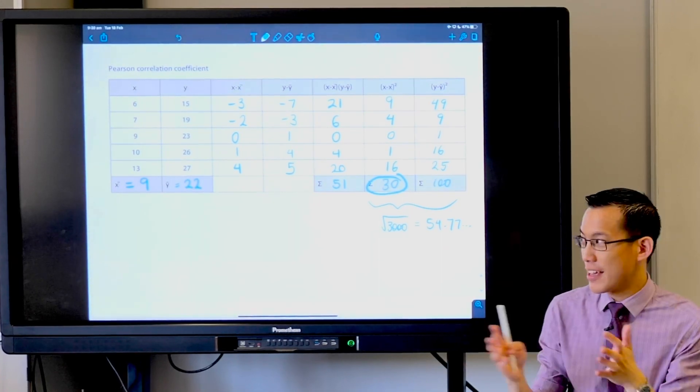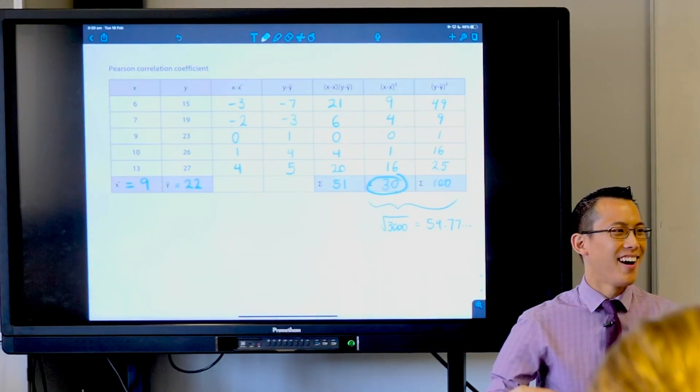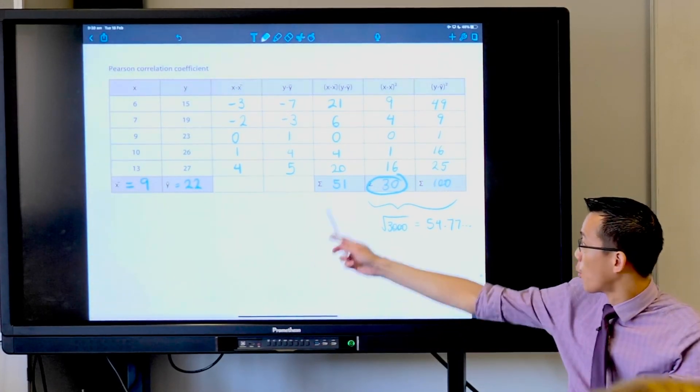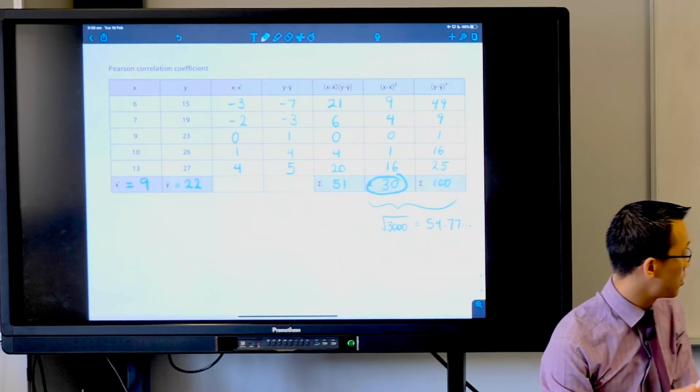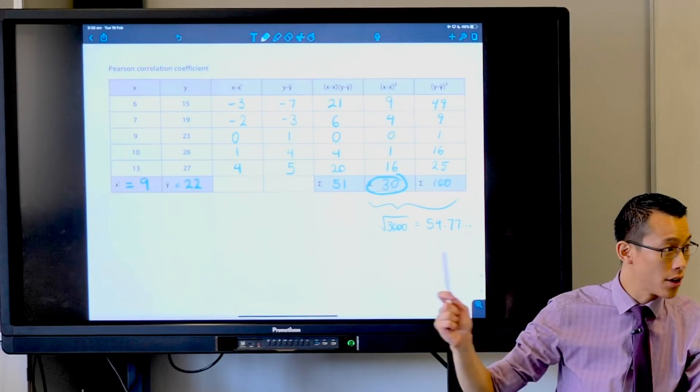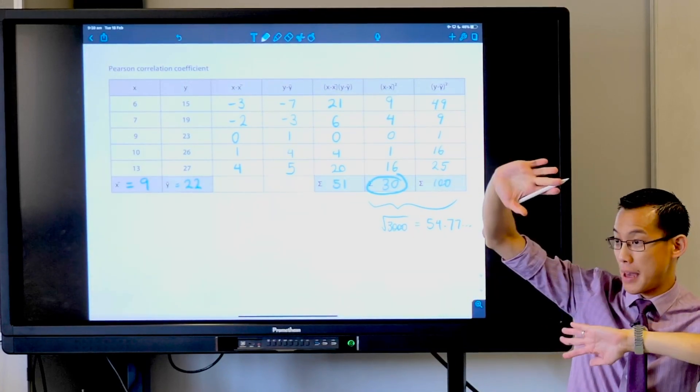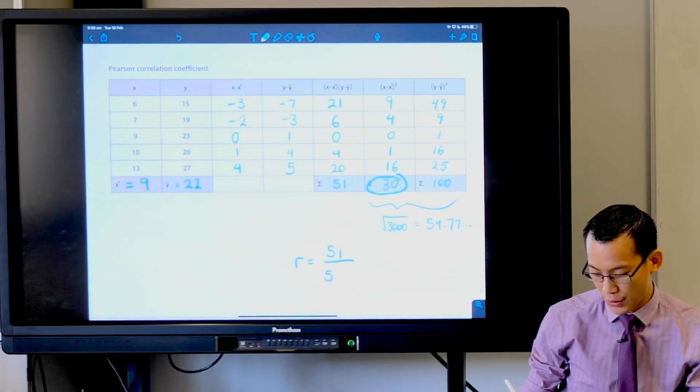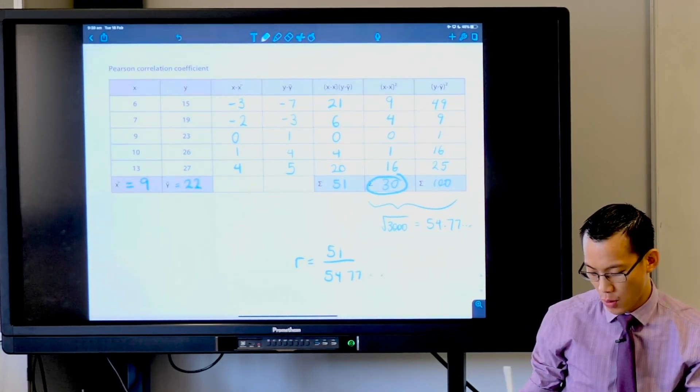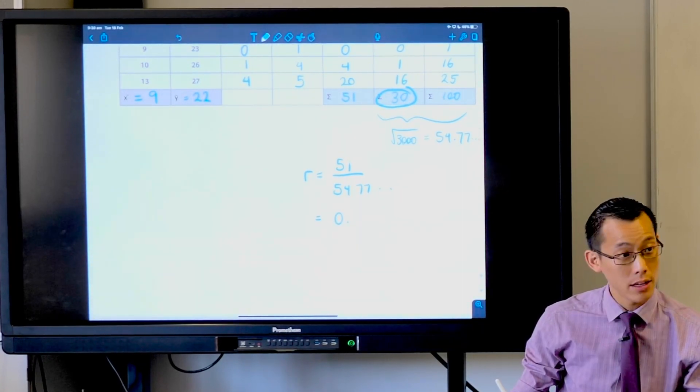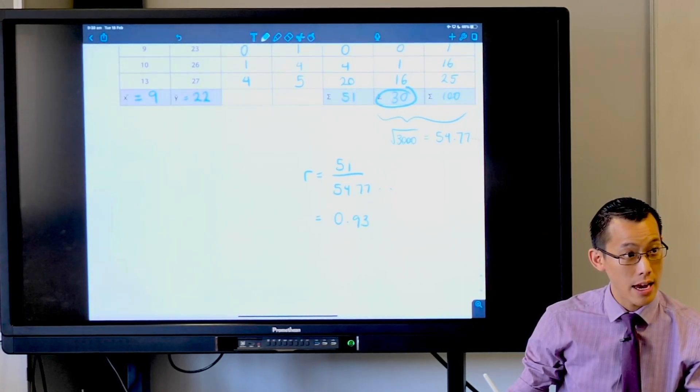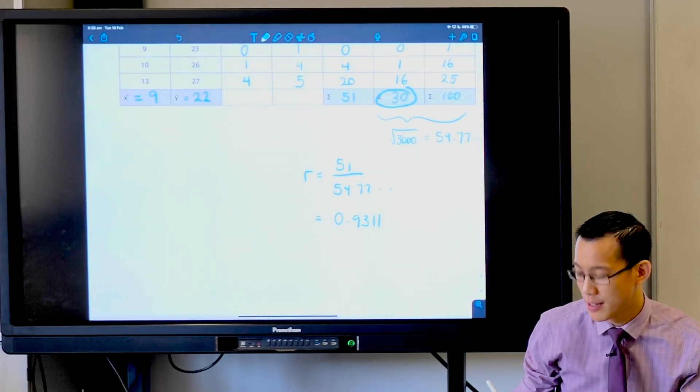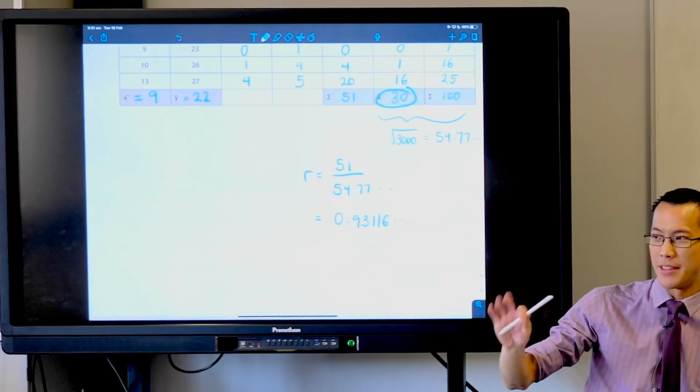Okay, thank you, dot dot dot I assume. So how do we then take those? We're pretty much there. We're taking that 51 which we did work out earlier, all the way over here, and then we're also taking this was it 54.77 and we're dividing one by the other. So we're gonna get a value of R which equals 51 divided by this 54.77 business.